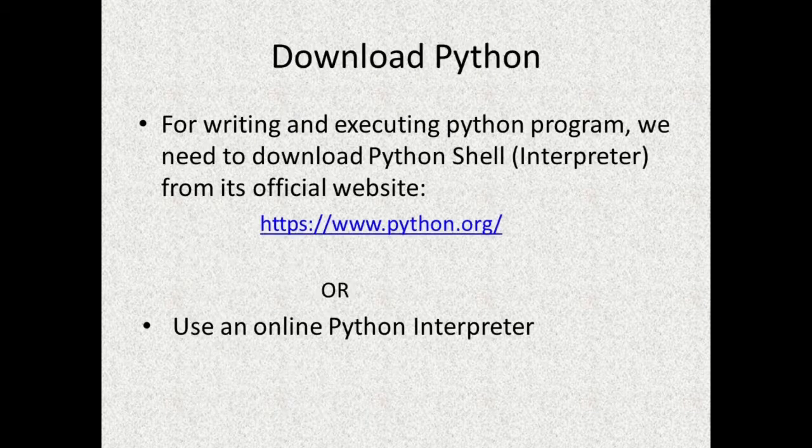Now we will see how to write and execute Python programs. For that we need to download the Python interpreter, which is also called the Python shell. It is a free and open source software. If you don't want to download it or you want to use a mobile phone, you can use a web browser like Google Chrome to run Python programs online.